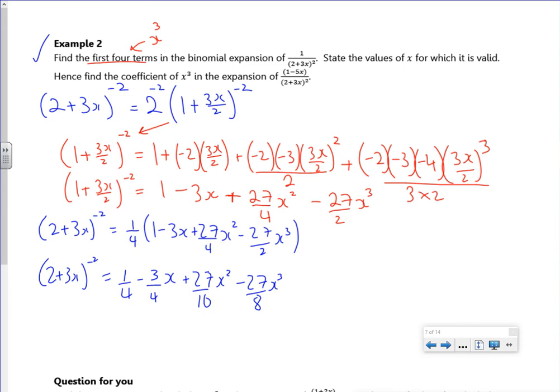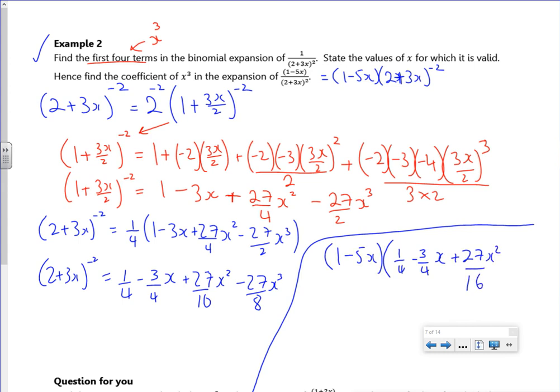So then it says, hence find the coefficients of this. Now it's important to see that as 1 minus 5x multiplied by 2 plus 3x to the minus 2. Because that way you can see that all I have to do is multiply by what I've got here.